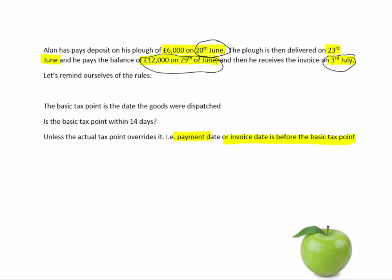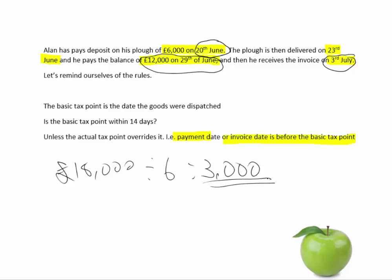So the total amount of VAT he can claim is going to be on the total £18,000. We divide it by six, which gives us £3,000. The reason we divide it by six is that is the current VAT fraction — there are six 20%s in 120%. Alternatively, you could divide by 120% and multiply by 20%, which still gives £3,000. So that's the amount of VAT that Alan can claim on his June VAT return.